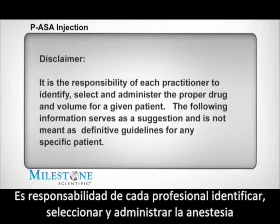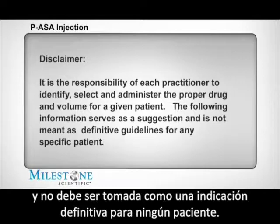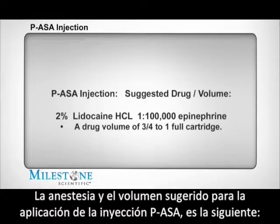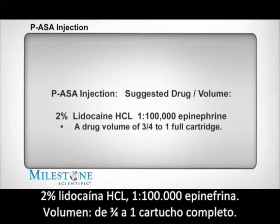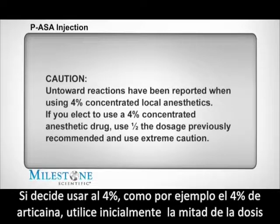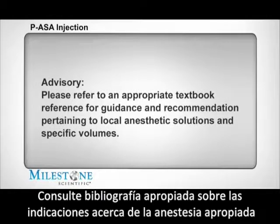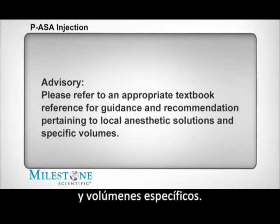It's the sole responsibility of each practitioner to identify, select, and administer the proper drug and volume for a given patient. The following information serves as a suggestion and is not meant as definitive guidelines for any specific patient. The suggested drug for the PASA injection is 2% lidocaine HCL with 1:100,000 epinephrine. A drug volume of three-quarters to one full cartridge is suggested. Untoward reactions have been reported when using 4% concentrated local anesthetics. If you elect to use a 4% concentrated local anesthetic such as 4% articaine HCL, use one half the previously suggested dosage and use caution. Please refer to an appropriate textbook reference source for guidance on local anesthetic solutions and specific volume.